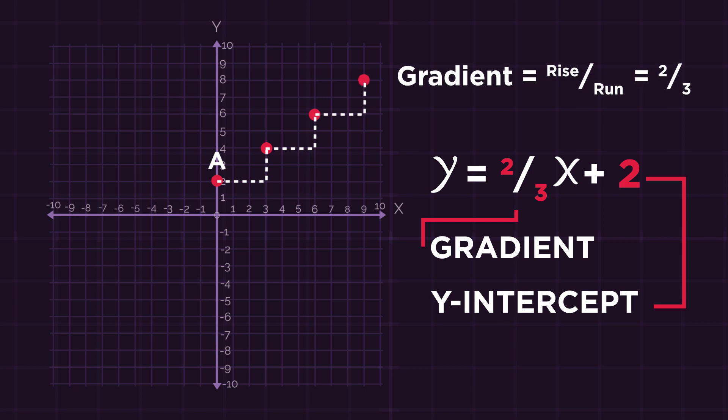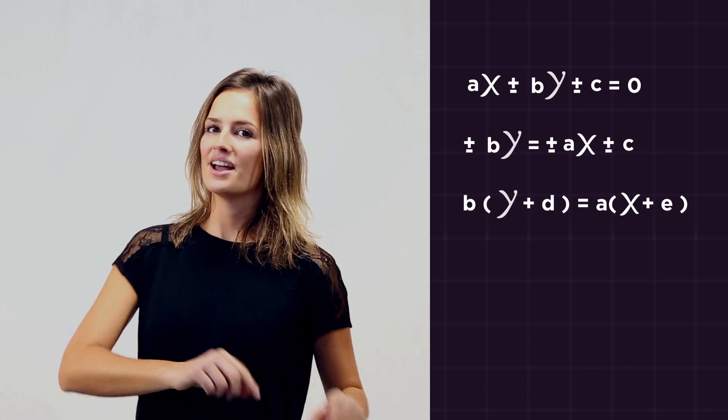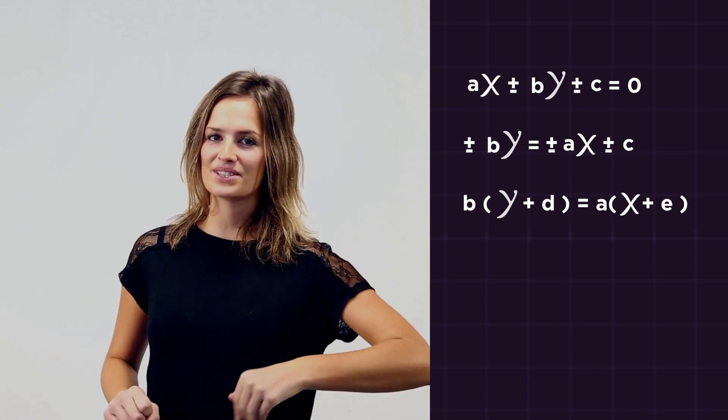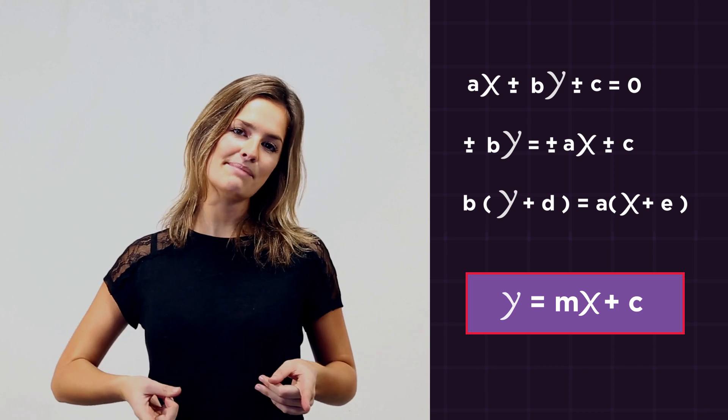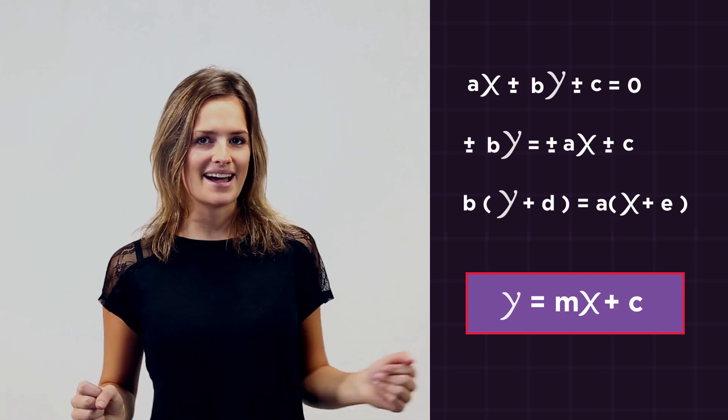So there we have rearranging straight lines algebraically. We just need to recognize that any equation with an x and a y will be a diagonal straight line, and it might also have a c number too. And we may want to rearrange into the y equals mx plus c form, as it's much easier for finding the gradient direction and the y-intercept.